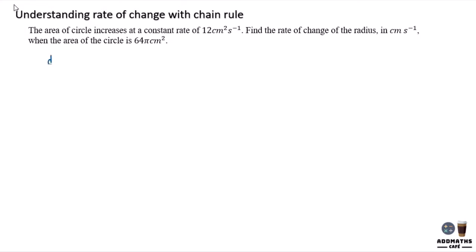Same type of question: the area of circle is increasing at a constant rate. I know that dA/dt is 12, because the area of circle is increasing at a constant rate, so dA/dt equals 12.